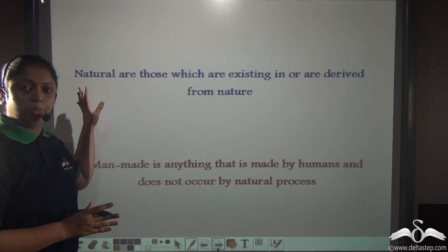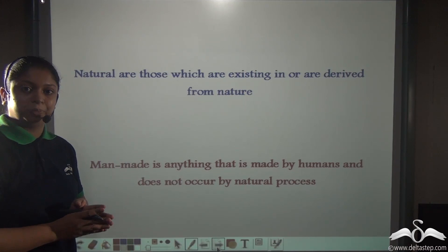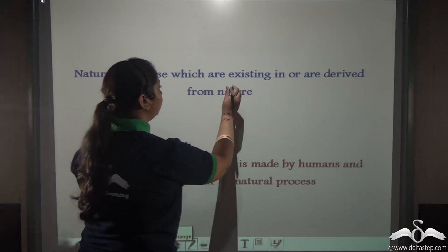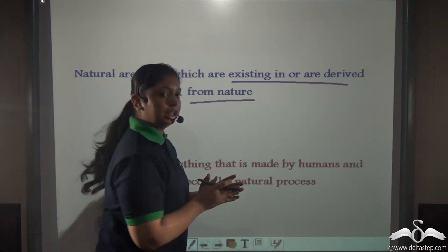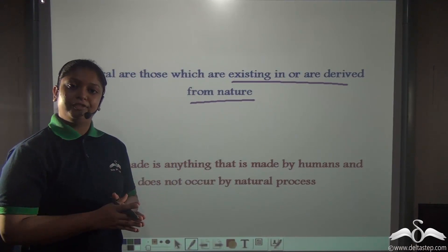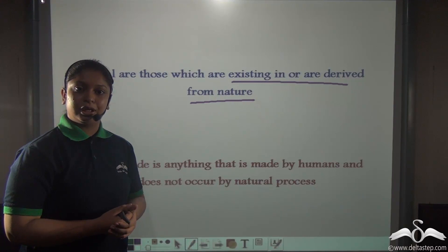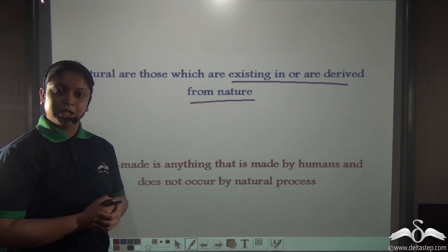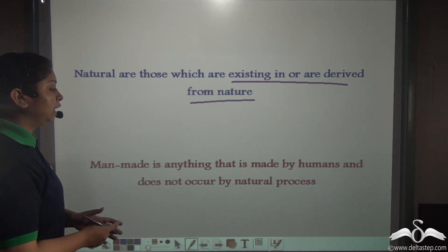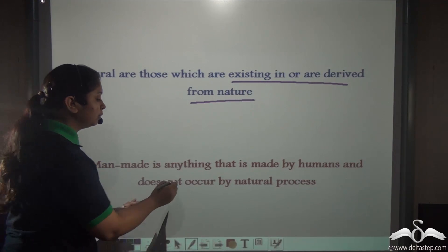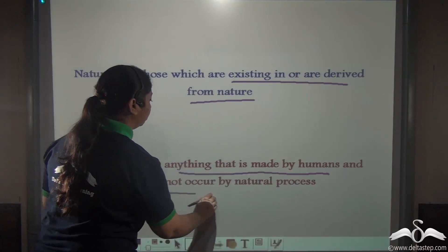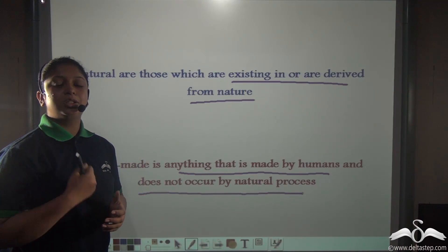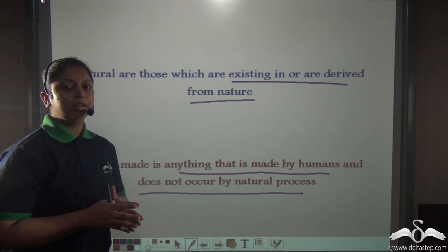So how can we define what is natural and what is man-made? Natural are those which are existing in or which are derived from nature. So Mount Everest has been existing in nature since ages, but the Burj Khalifa has been recently created by man. Man-made is anything that is made by humans and which does not occur by natural process. So man needs to give his input in order to build a man-made structure.